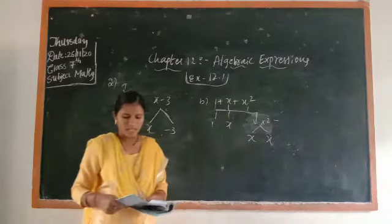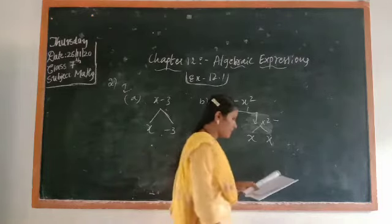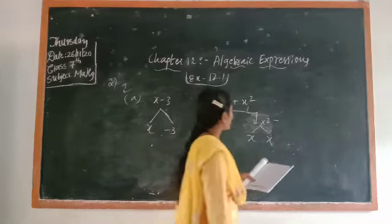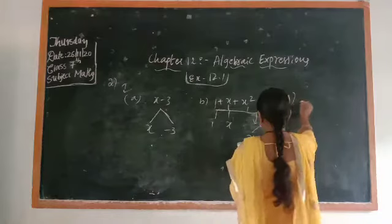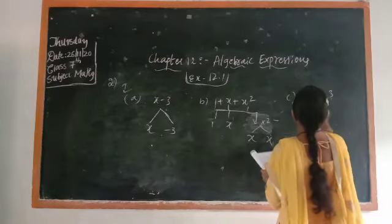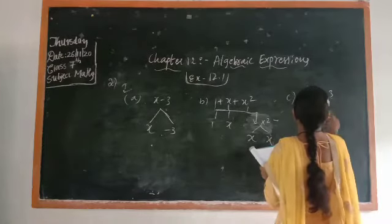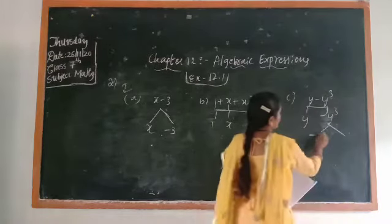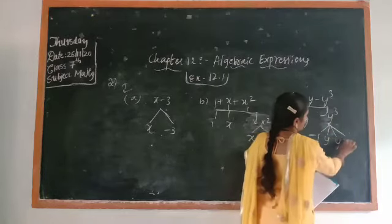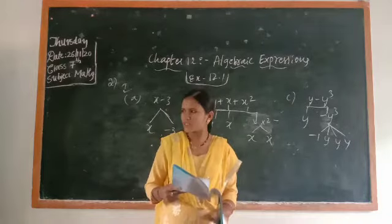Next, take the expression y − y²z. You have to include the minus sign as part of the term as well. Write y, then minus y²z. You write it three times in the diagram as required, and solve the remaining examples the same way.